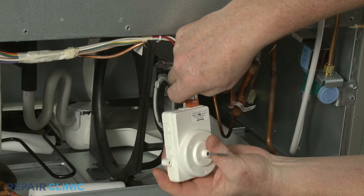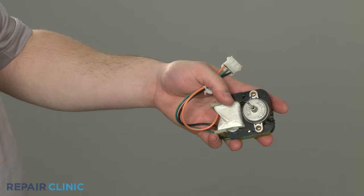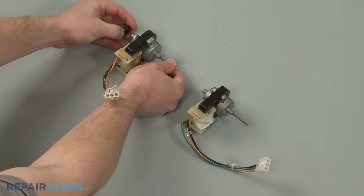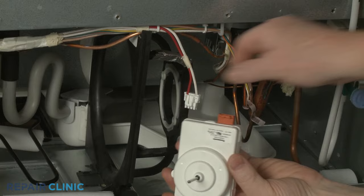When installing a new condenser fan motor, be aware you may need to transfer rubber mounts or grommets from the old motor to the new one. Connect the wire connector. Then align the motor on the bracket and thread the mounting screws.